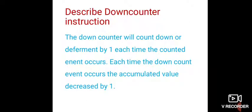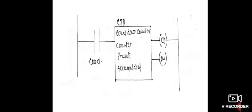The down counter instruction is similar to the up counter, but it acts in reverse order. Whenever the input transitions from low to high, the counter decrements by 1 and continues counting down until it reaches 0. When the counter becomes 0, we can trigger the output activity — for example, to close a door. The ladder diagram for the down counter is shown in the figure.